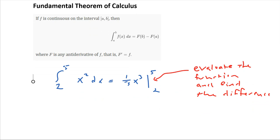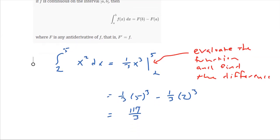So this is just going to be 1/3 times 5 cubed minus 1/3 times 2 cubed. So that would be 117 over 3. And it's that easy, folks. Just find our antiderivatives.